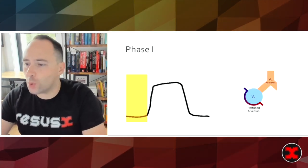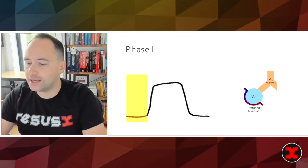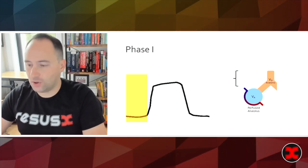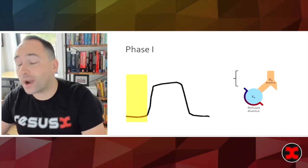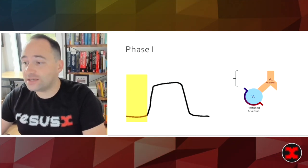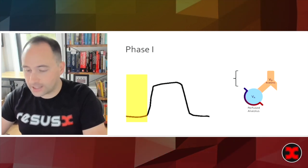So this is phase one. Phase one corresponds to the exhalation of pure dead space gas. So this is all of the gas from your central conducting airways or any equipment that is distal to your sampling site. Ideally this area or this phase should have no detectable carbon dioxide.